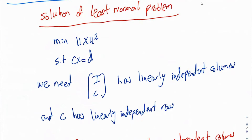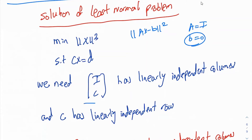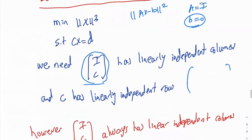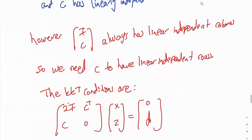This is a least squares type problem. It is similar to the standard form where A is identity and B is 0. Go ahead and write the optimality condition. We need the stacked matrix of I and C to have linearly independent columns, and we need C to have linearly independent rows. Since I always has linearly independent columns, even if C does not, the stacked matrix still has linearly independent columns. So we only need C to have linearly independent rows.